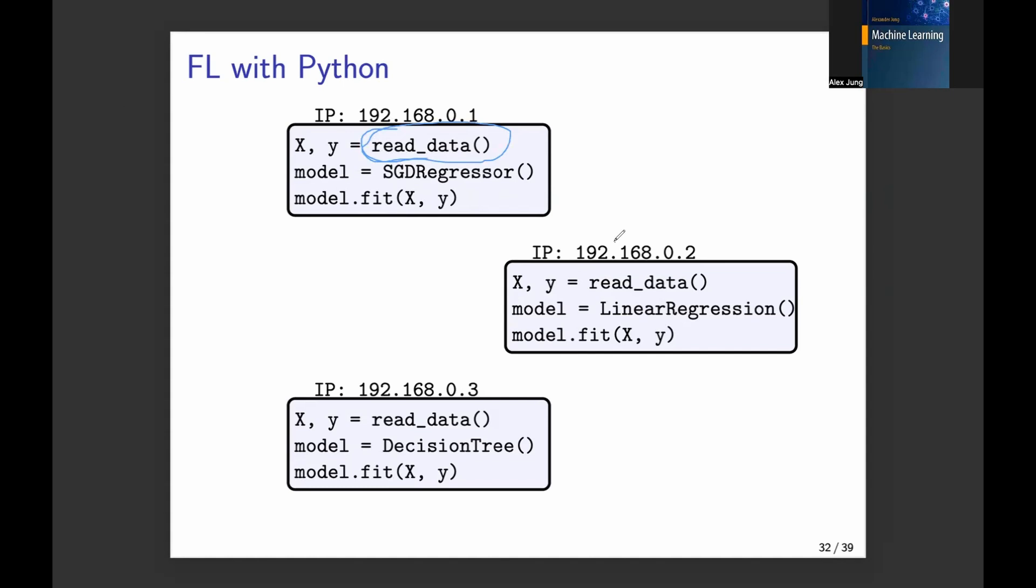reading data from this IP address. And the information that is shared here is not the raw data, but it's, for example, a model parameter update, like a delta W, a model parameter update that is used somehow in this read data function to generate new feature matrix and label vector. You can turn model parameters into data, you will see this later. So like machine learning training turns data into a trained model, but you can also do it the other way, and we will use this to implement and construct federated learning systems,